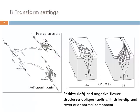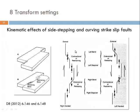Let's look at flower structures again. We have discussed pop-up structures and pull-apart basins in relationship with restraining or releasing bends along curving or sidestepping strike-slip faults. A positive flower structure is a curving part of a strike-slip fault where we have contractional tectonics — reverse faulting associated with strike-slip faulting — meaning each individual fault has both a strike-slip and a reverse component. If the sidestepping is in the opposite direction, we create space and have a normal component associated with strike-slip faulting. This scheme illustrates dextral and sinistral strike-slip faulting with respective sidestepping or curvature creating either restraining or releasing bends.